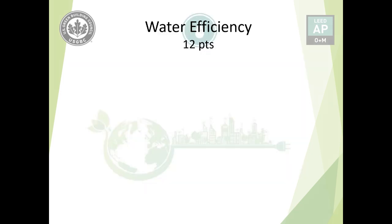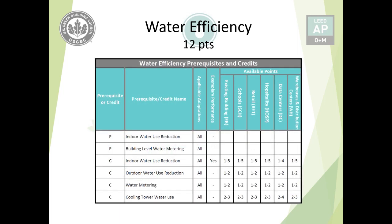Hello and welcome to Water Efficiency Credit Category for 12 points. This is what we will be discussing in this video. We have this chart having two prerequisites and four credits. We have subsequent credits for the prerequisites: indoor water use reduction prerequisite and credit, building level water metering prerequisite and water metering credit. I have put them together one after another because it makes better flow and makes more sense.